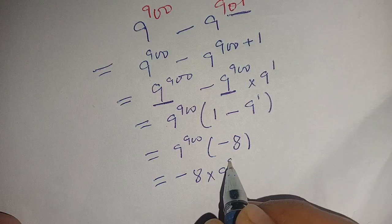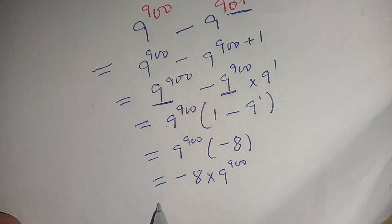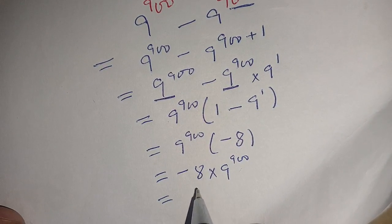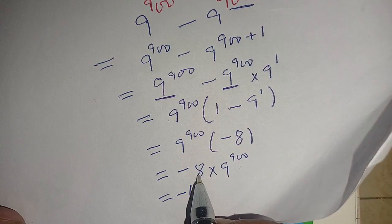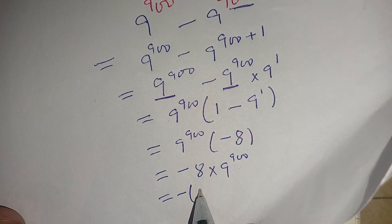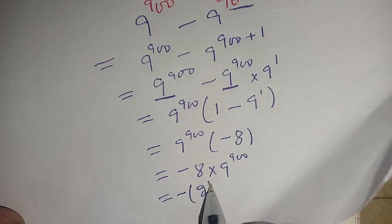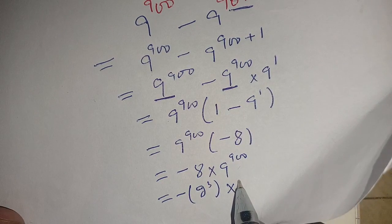For a more simple equation we can write -8 as -2^3, because 2^3 equals 8. So -2^3 times... and 9 can be written as 3 times 3, which is 3^2.